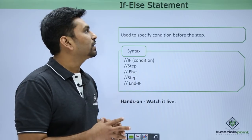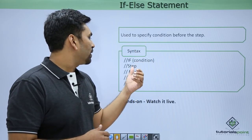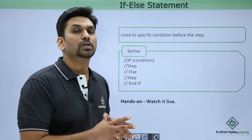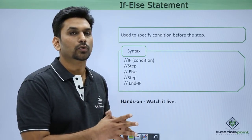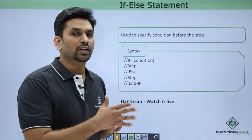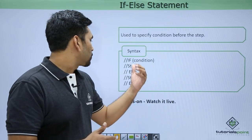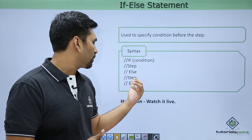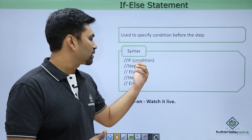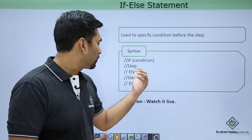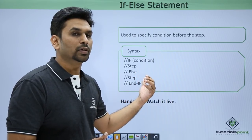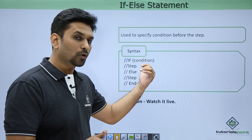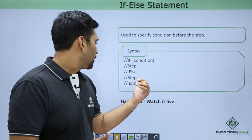For the if-else condition, you check only status codes from previous return codes. You can mention any step in the if condition — if the condition is true, that step will be executed; otherwise it goes to the else part and that step will be executed. Based on the conditions, the system decides whether to execute the if block or the else block.